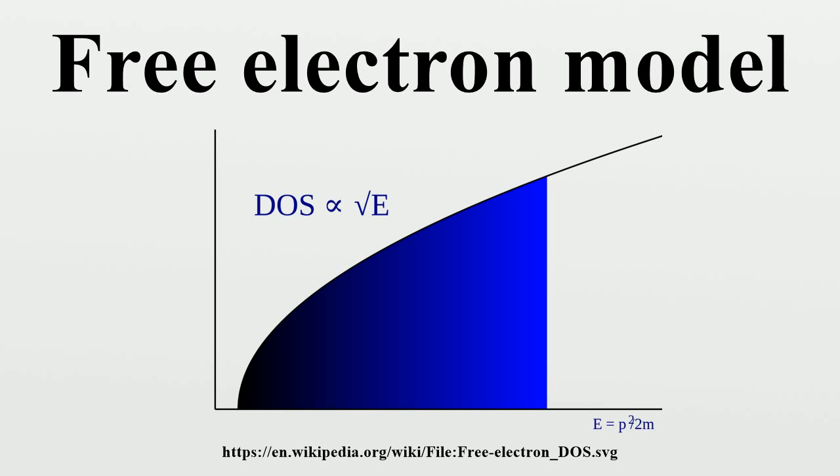A quantum mechanical justification is given by Bloch's theorem. An unbound electron moves in a periodic potential as a free electron in vacuum, except for the electron mass M becoming an effective mass M*, which may deviate considerably from M.